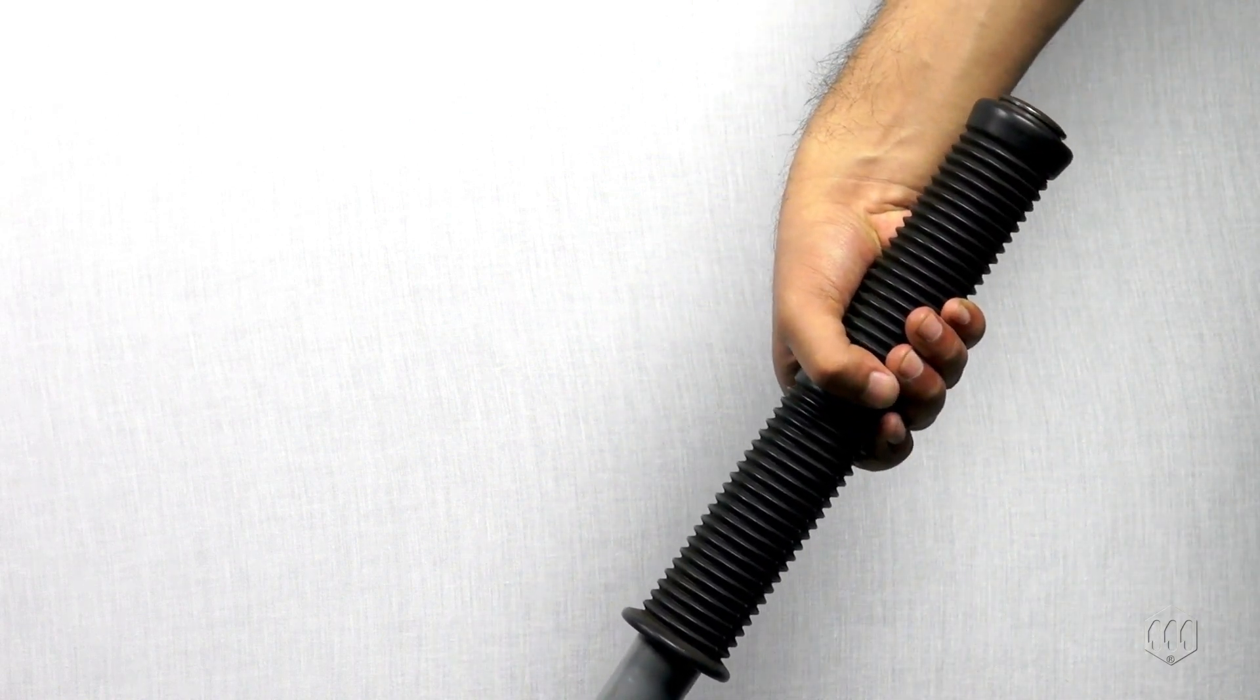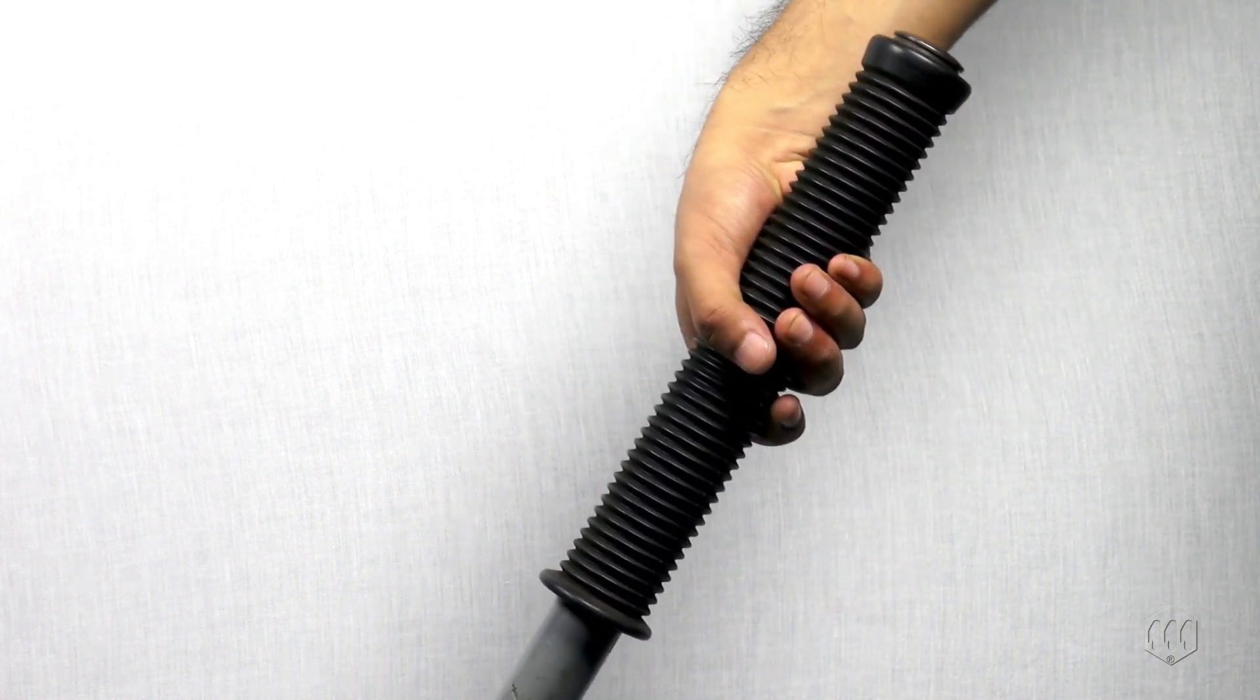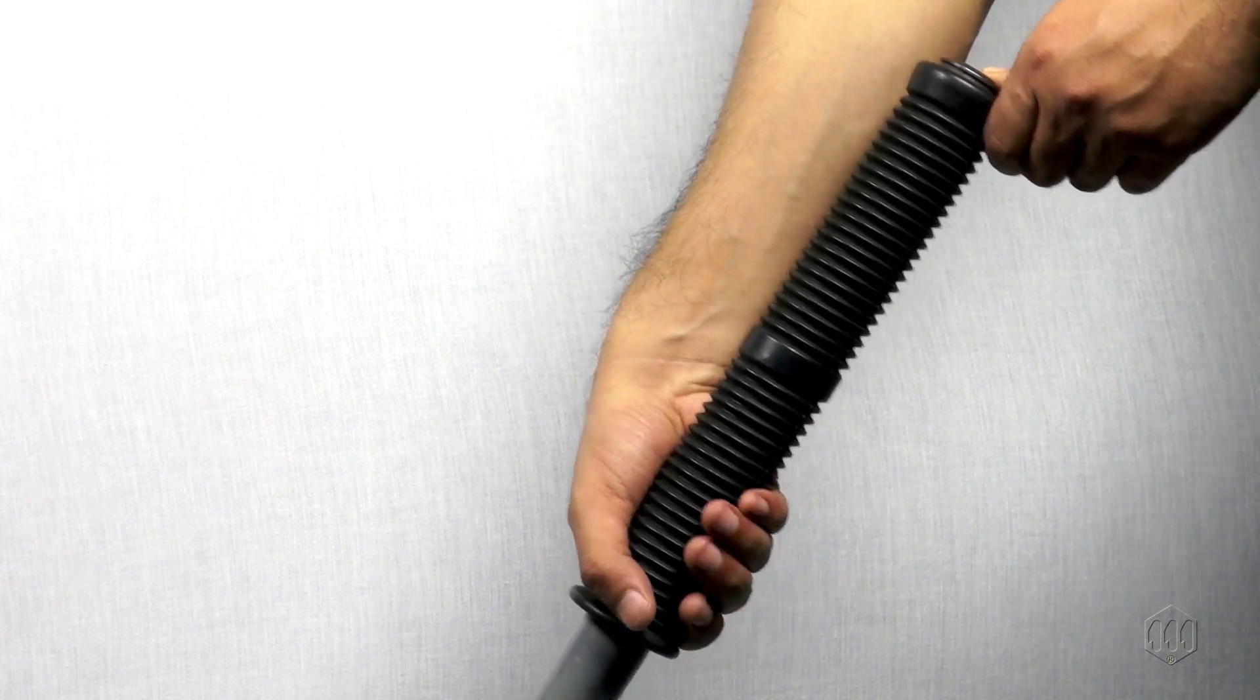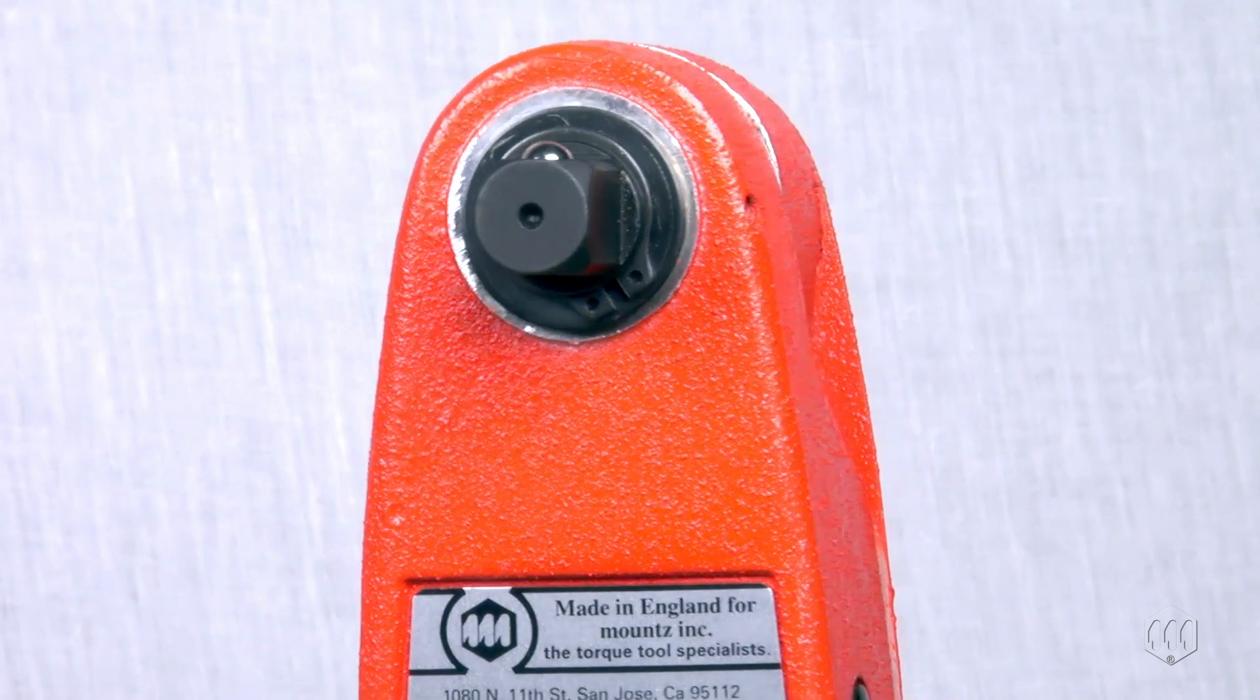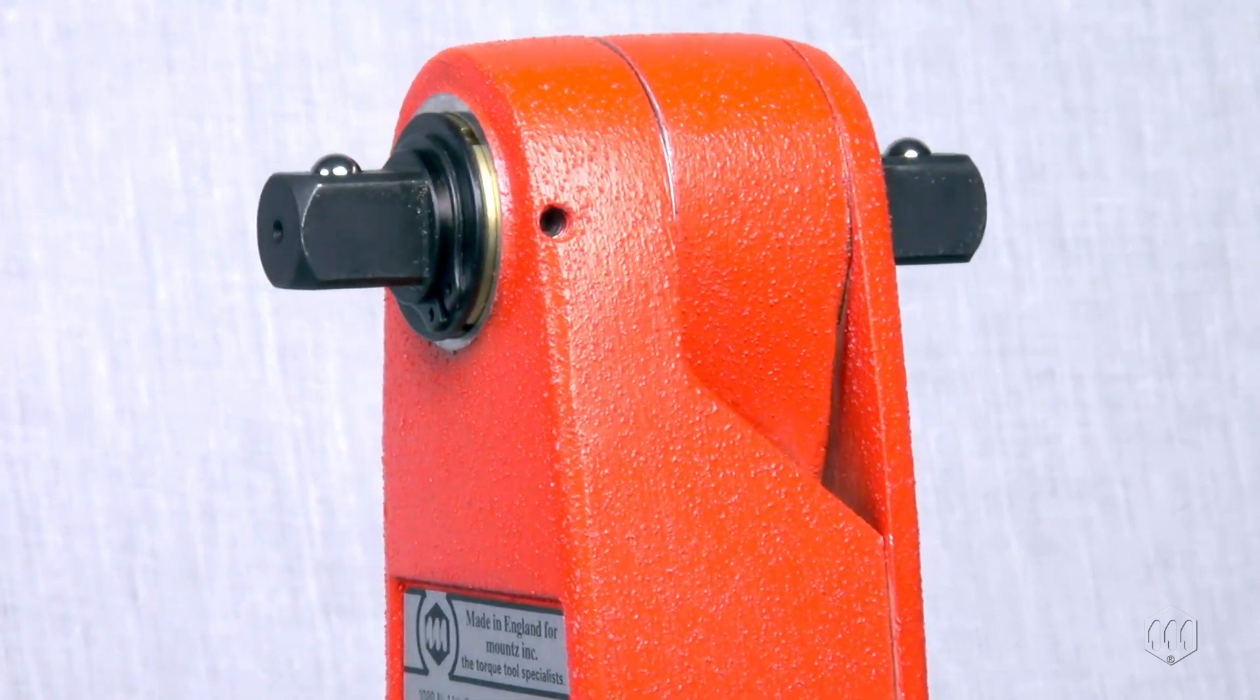These tools are non-length dependent and will measure the correct torque wherever it is held along its handle. A recessed dial minimizes breakage. The double-end square drive can be used for tightening and loosening.